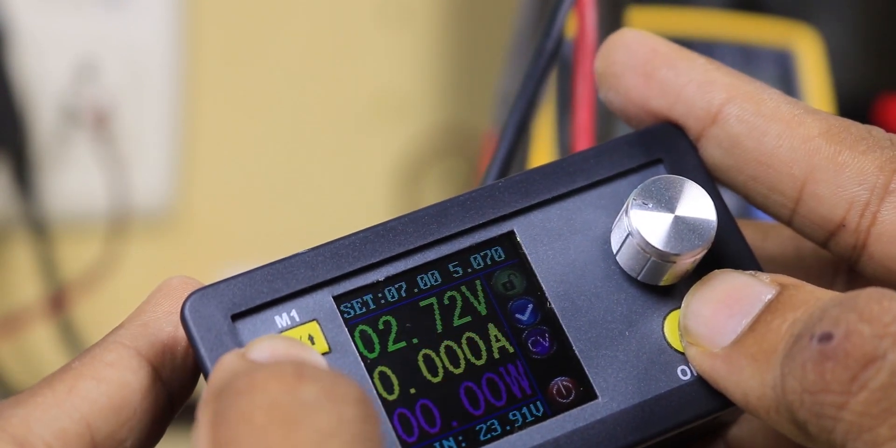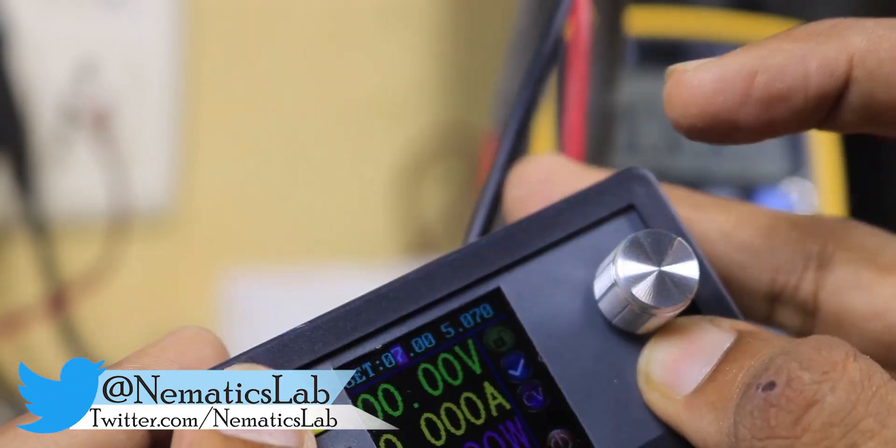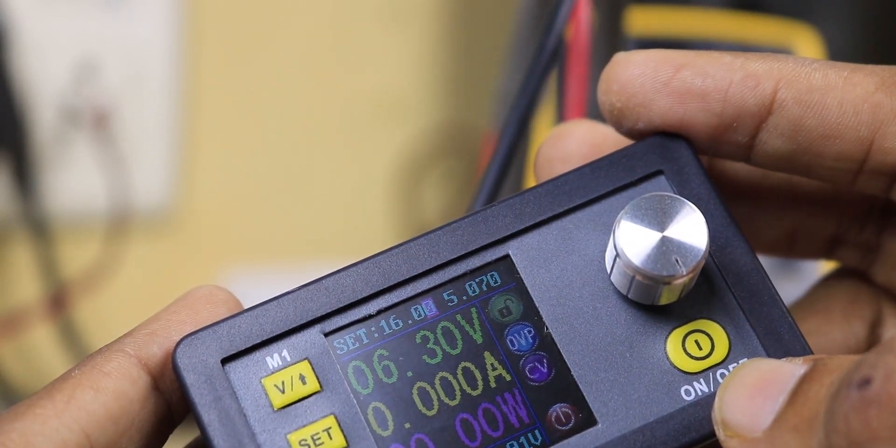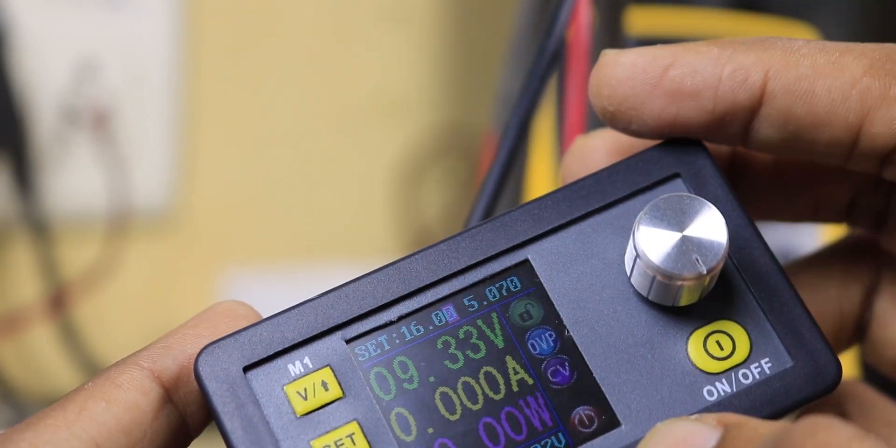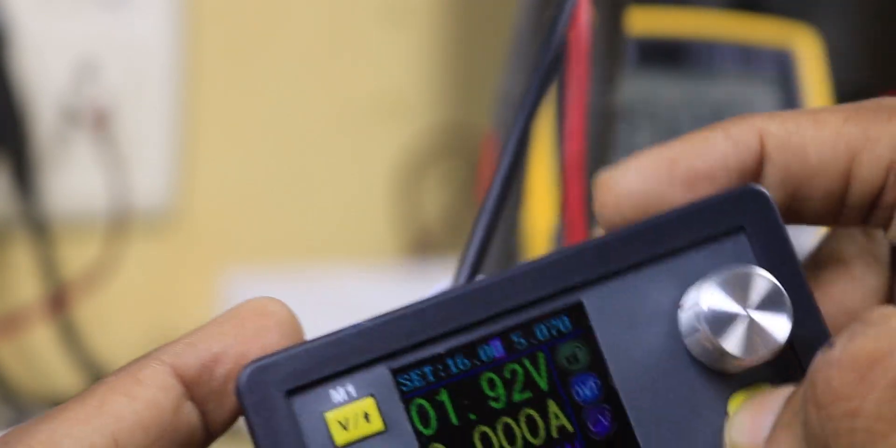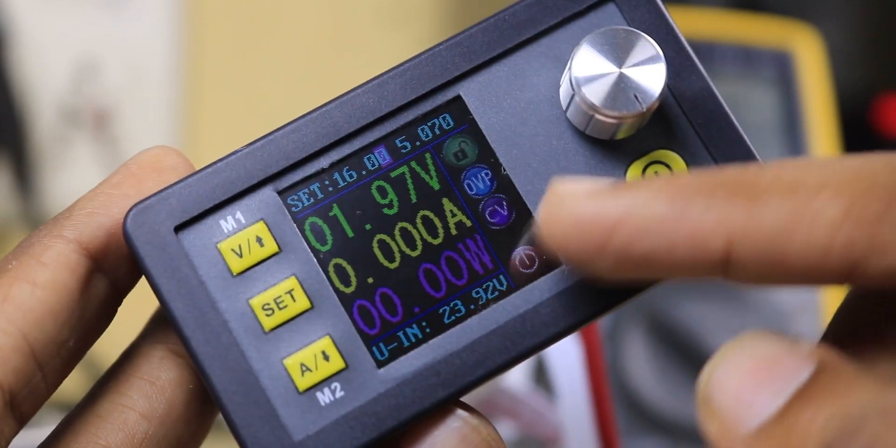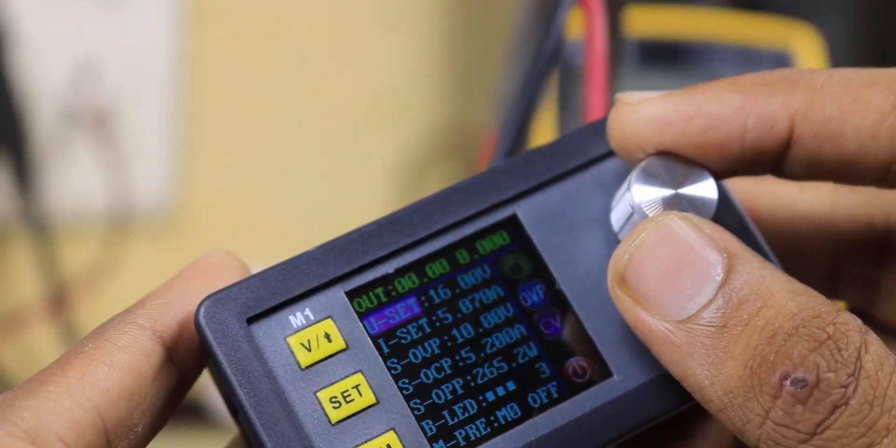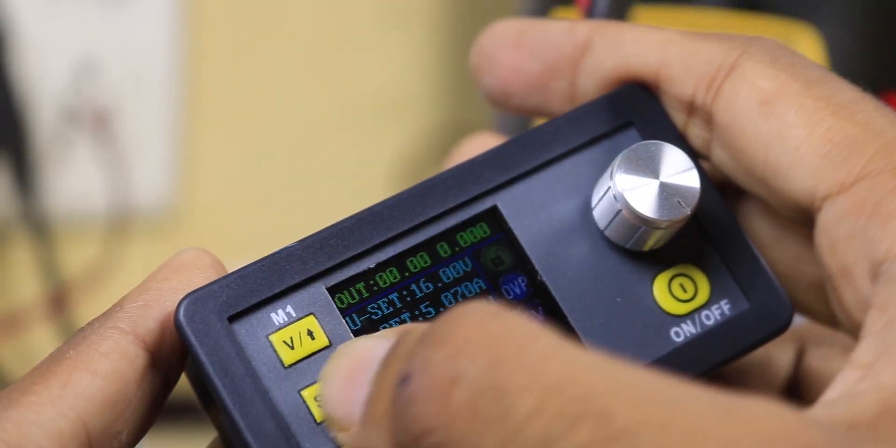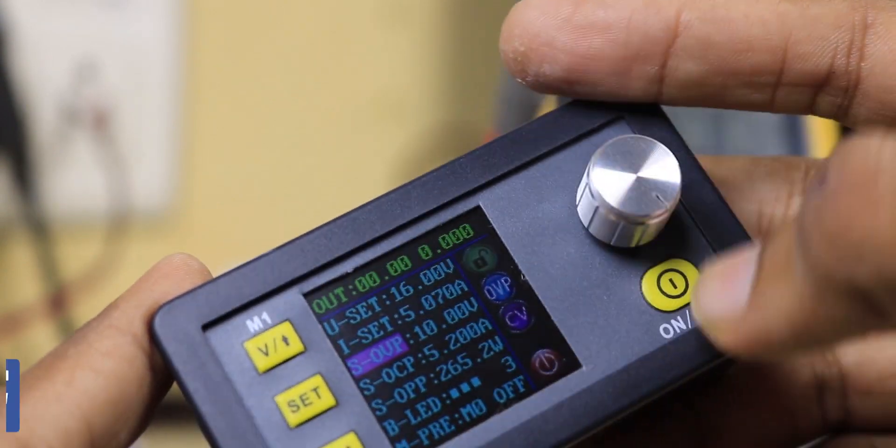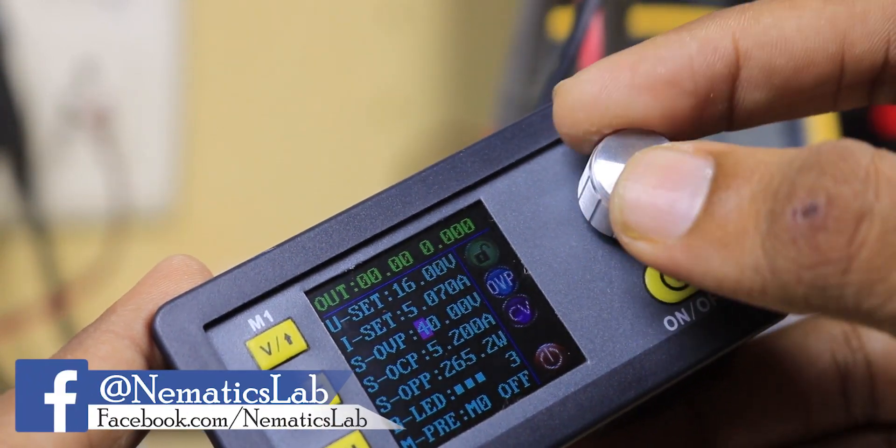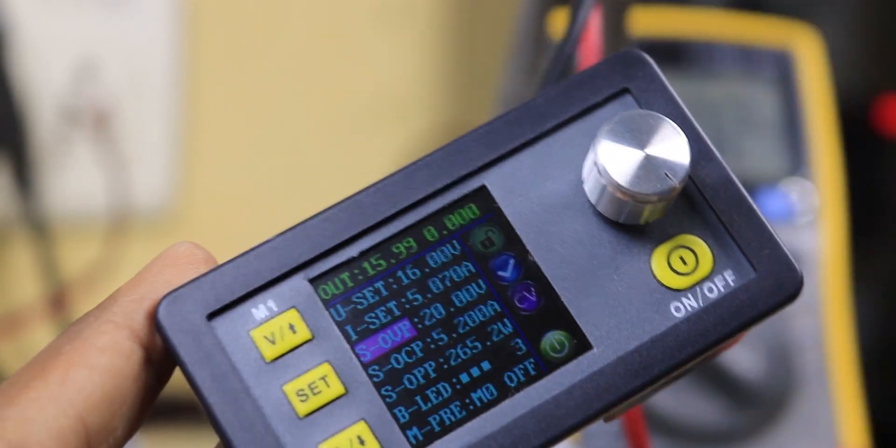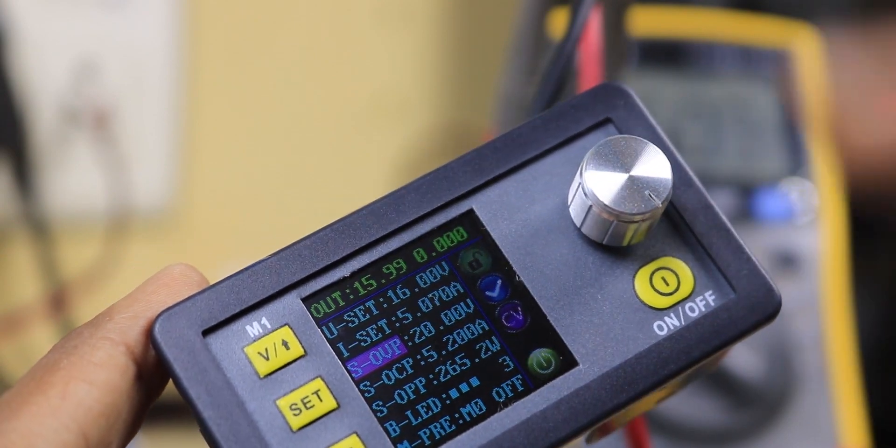I just set this to 16 volts but it's turning off because I set the output maximum voltage limit to 10 volts. Let me change it to 20 volts and power it on again. This menu is kind of annoying because I have to use a different button sometimes. Now it's set to 20 volts. Let's turn it on - now it's coming at 16 volts.